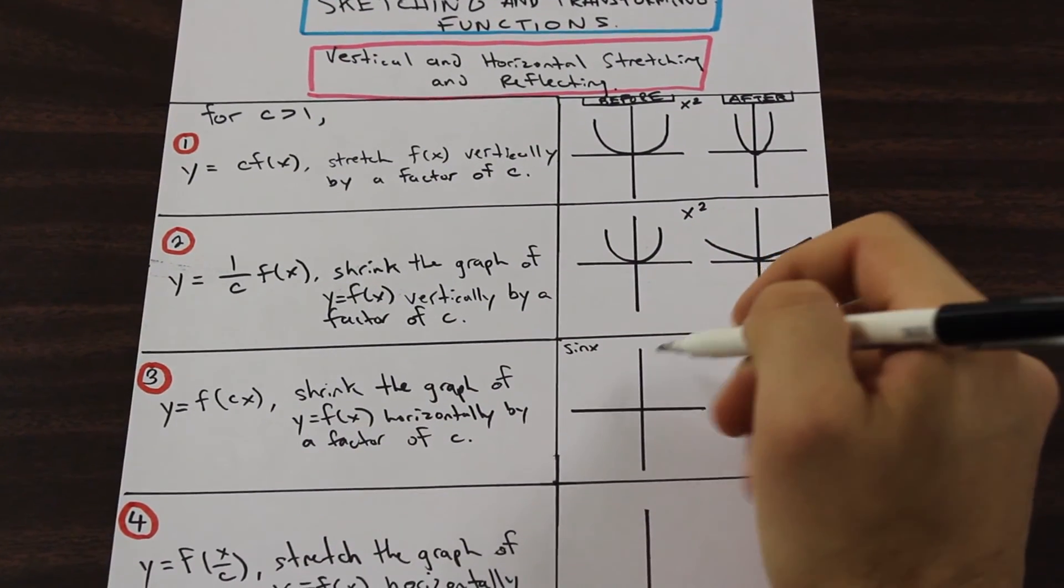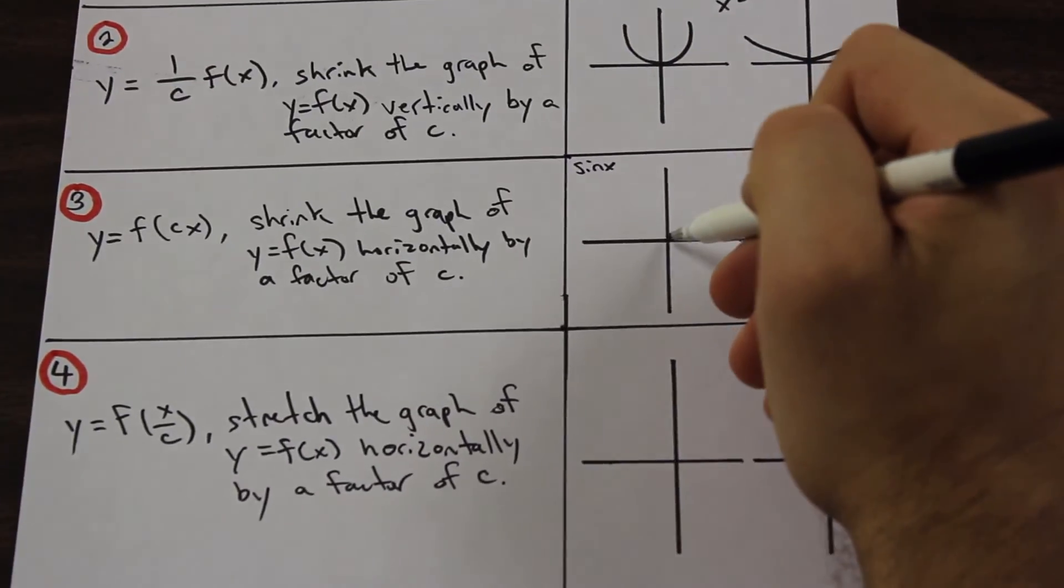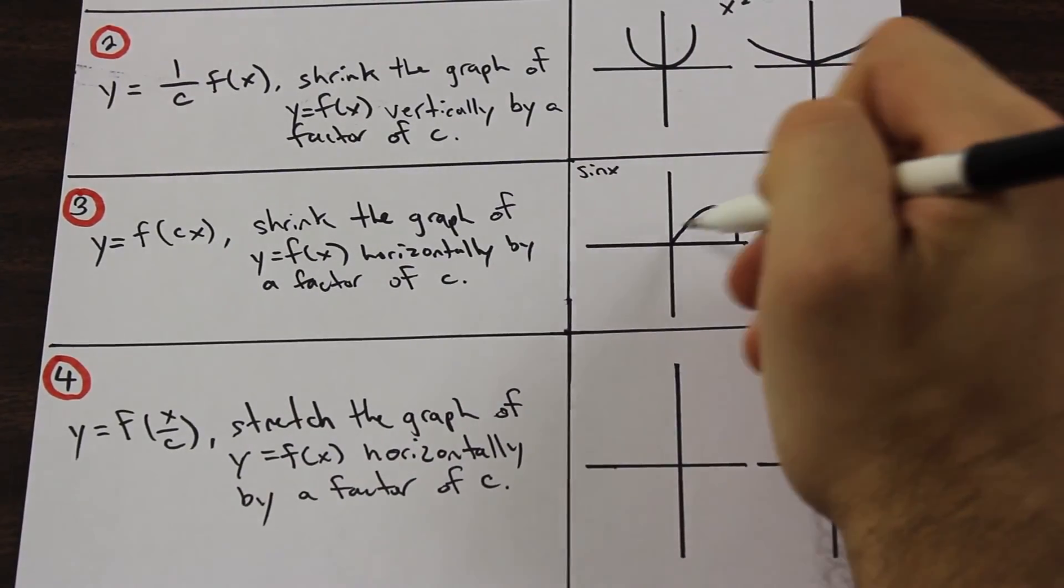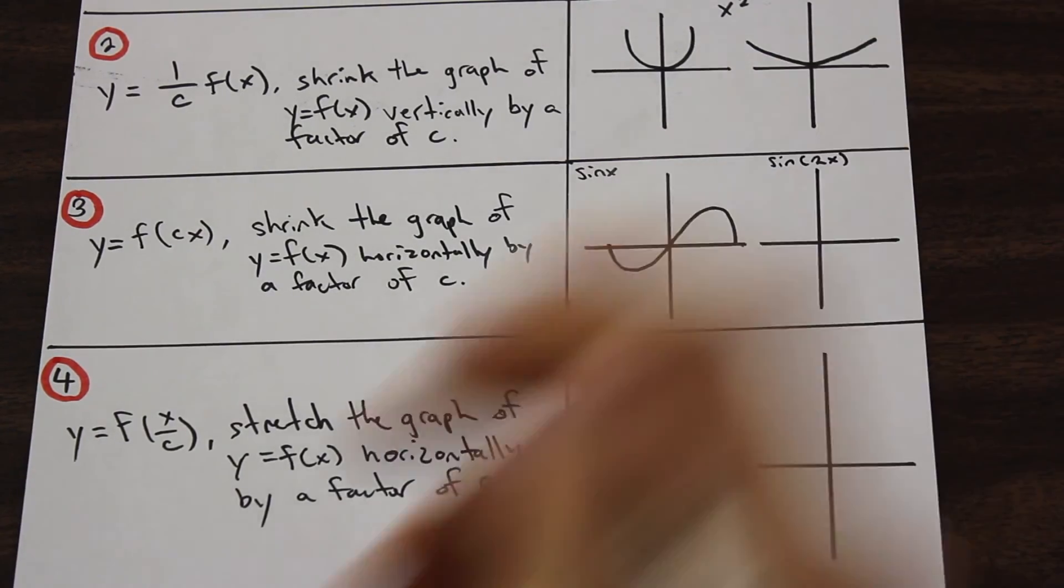So sine, if we know, usually looks just like this, right? So we have something like that.